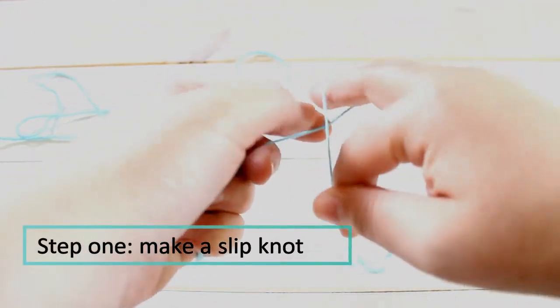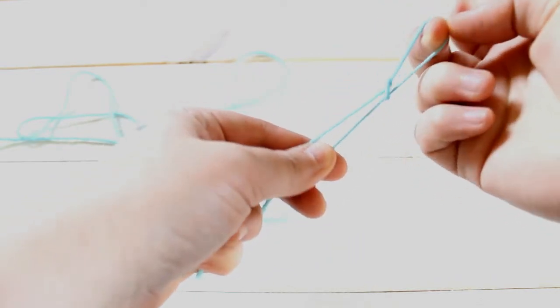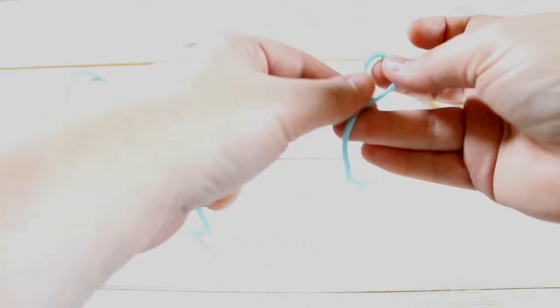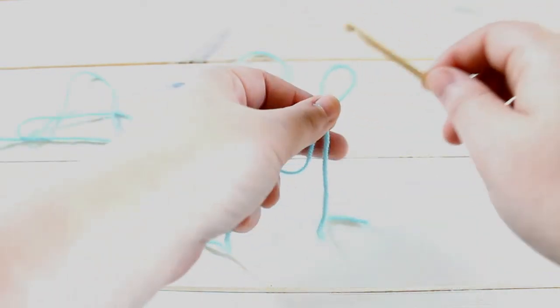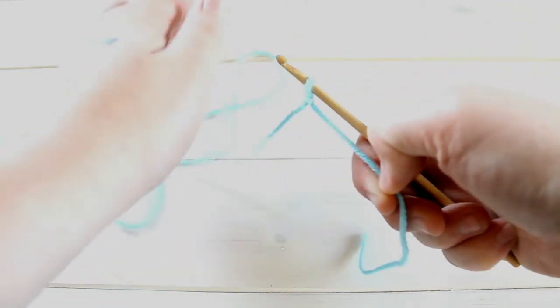Crossing that over and pulling the tail through. So, slipknot. And we're just going to tighten that just a little bit.